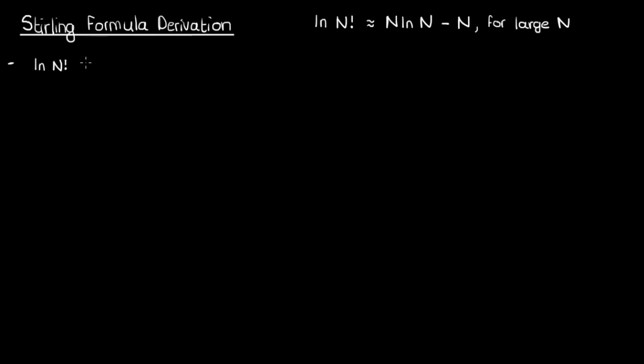We'll start with the natural log of n factorial. We know that n factorial is just capital N times capital N minus 1 times capital N minus 2 and so on all the way till 1.